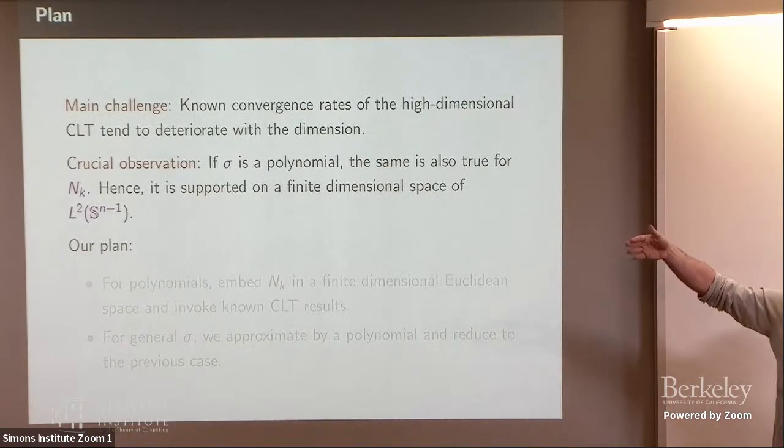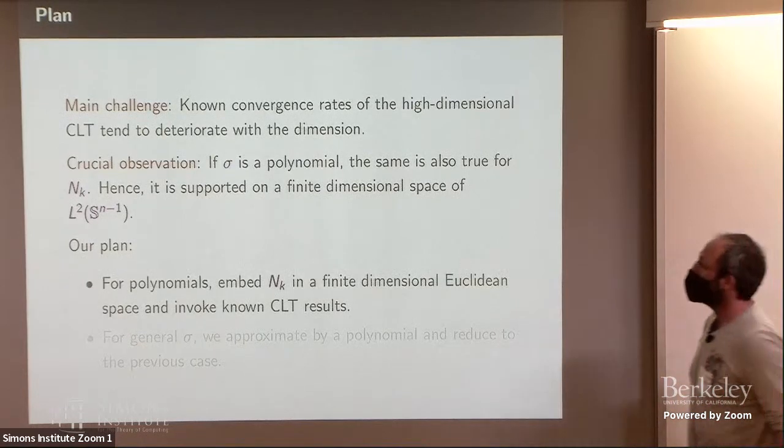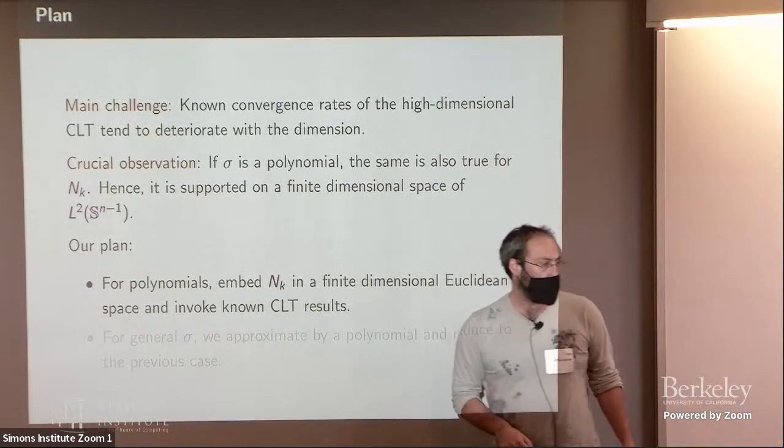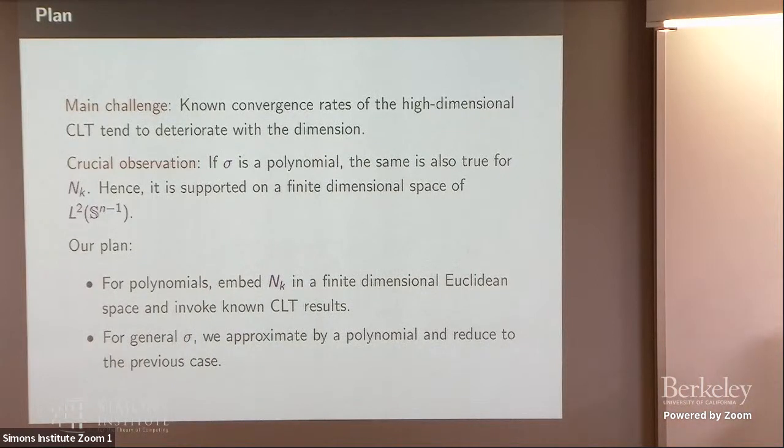So even though it lives in L^2 of the sphere, it is constrained to stay in some finite dimensional space. And then you can use, like, existing central limit theorems. Right? So the plan is to embed the law of the neural network in a finite dimensional Euclidean space and invoke the central limit theorem results. But we do need the embedding to be compatible with the metric. And so this works for polynomial activation. And for general activation, you can just approximate with polynomials. And that's more or less the plan.